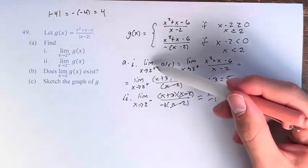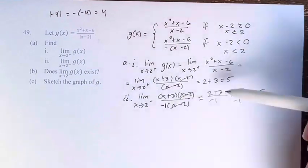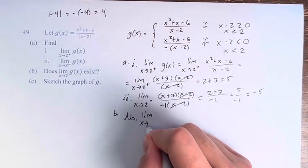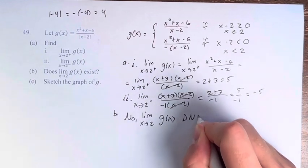Therefore, the limit as x approaches 2 from the right is 5. The limit as x approaches 2 from the left is negative 5. Therefore, no, the limit as x approaches 2 of g of x does not exist.